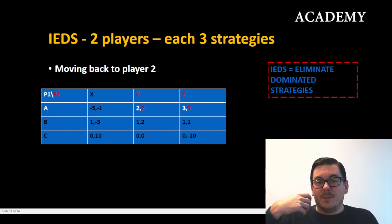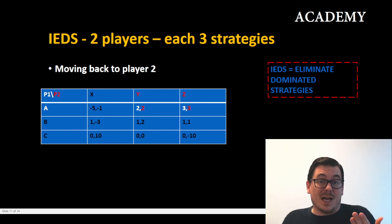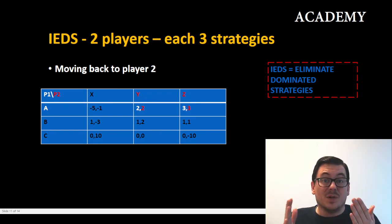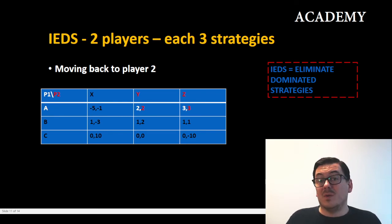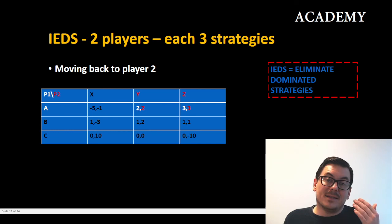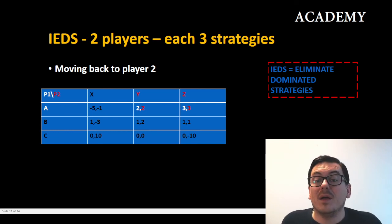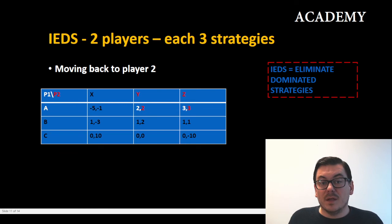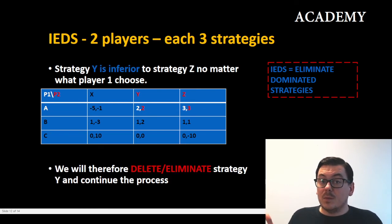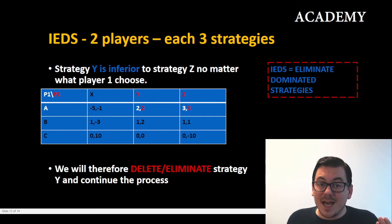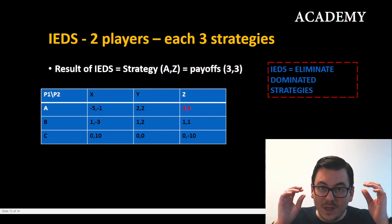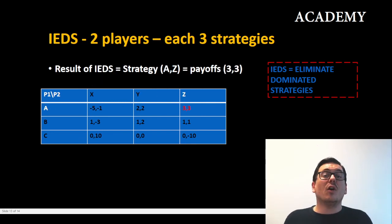With player one now having only one strategy, there's nothing more to compare for player one, so we go to player two. Player two must choose between Y and Z. Z gives player two three instead of two, so Y is inferior — we can delete Y.